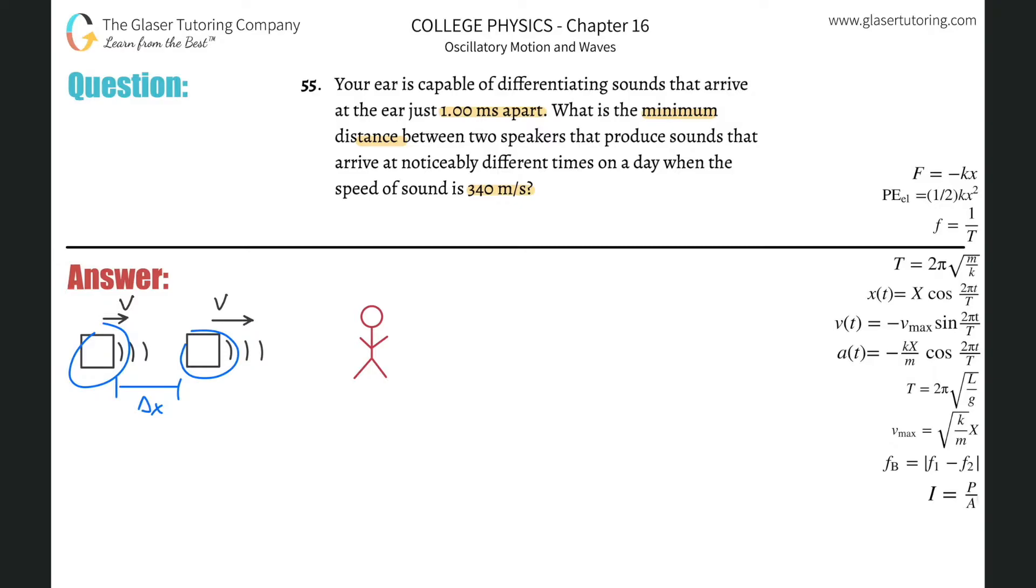So basically you have two speakers. They're each going to be propagating a certain wave at a speed of 340 meters per second. And we're trying to figure out how far can they be distance apart. And they also told us that the time difference, delta T, that we can hear these sounds is one millisecond, but that's basically 1 times 10 to the minus 3 seconds.